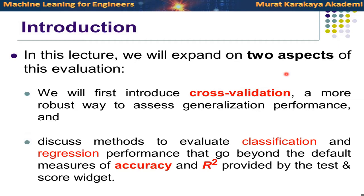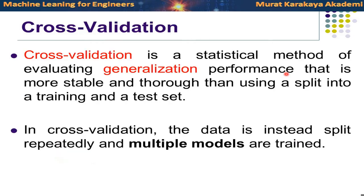In this lecture we are going to expand two aspects of evaluation. We will first introduce cross-validation, which is a very robust way to assess the generalization performance of a given method. Then we will discuss methods to evaluate classification and regression performance. So far we learned accuracy and R-squared. We are going to learn other metrics and relate them to real life success. Cross-validation is a statistical method of evaluating generalization performance that is more stable and reliable than using a single train-test split.